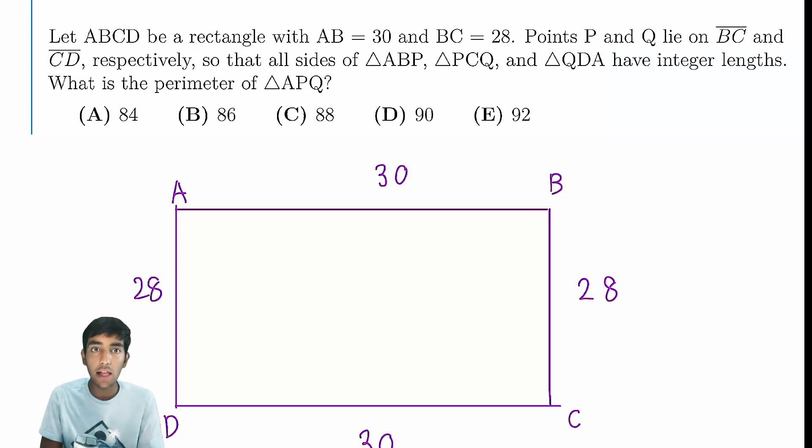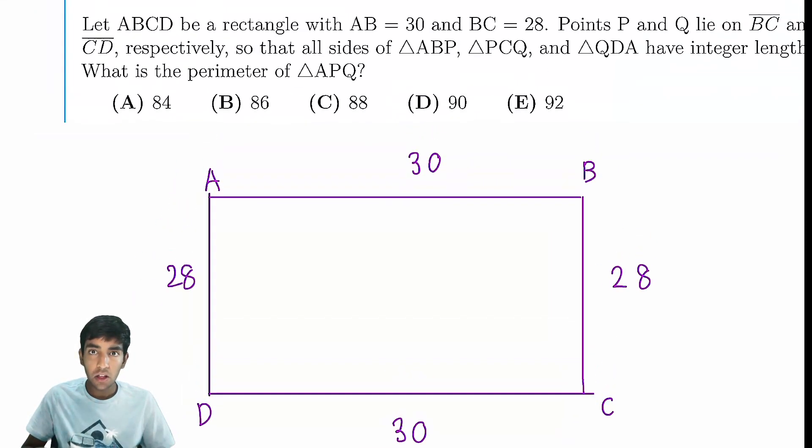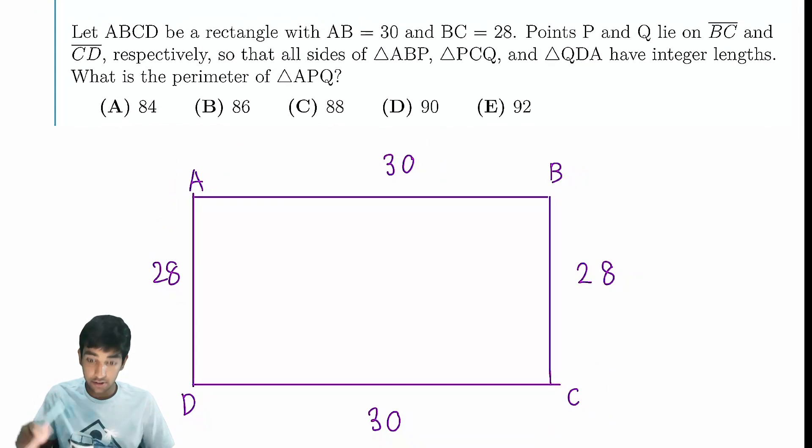Points P and Q lie on BC and CD respectively, so that all sides of triangle ABP, triangle PCQ, and triangle QDA have integer side lengths.